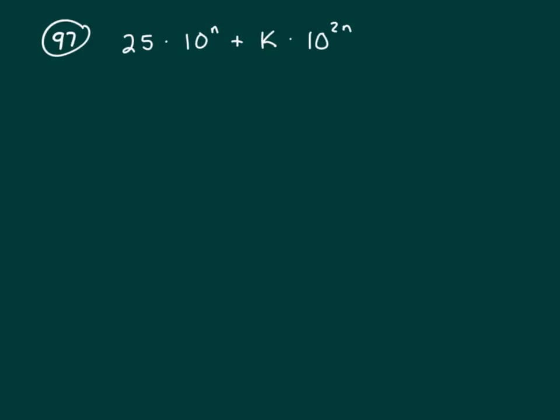We're trying to figure out what value of K will make this number that I've written on the board divisible by 9. We know our number is divisible by 9 if you sum up the digits and the sum is divisible by 9.